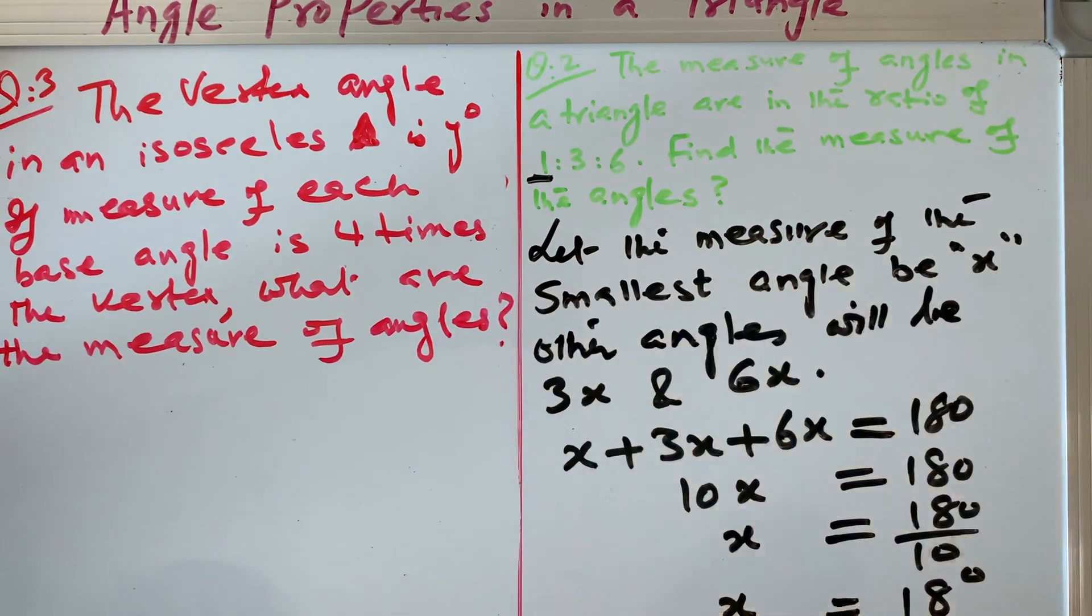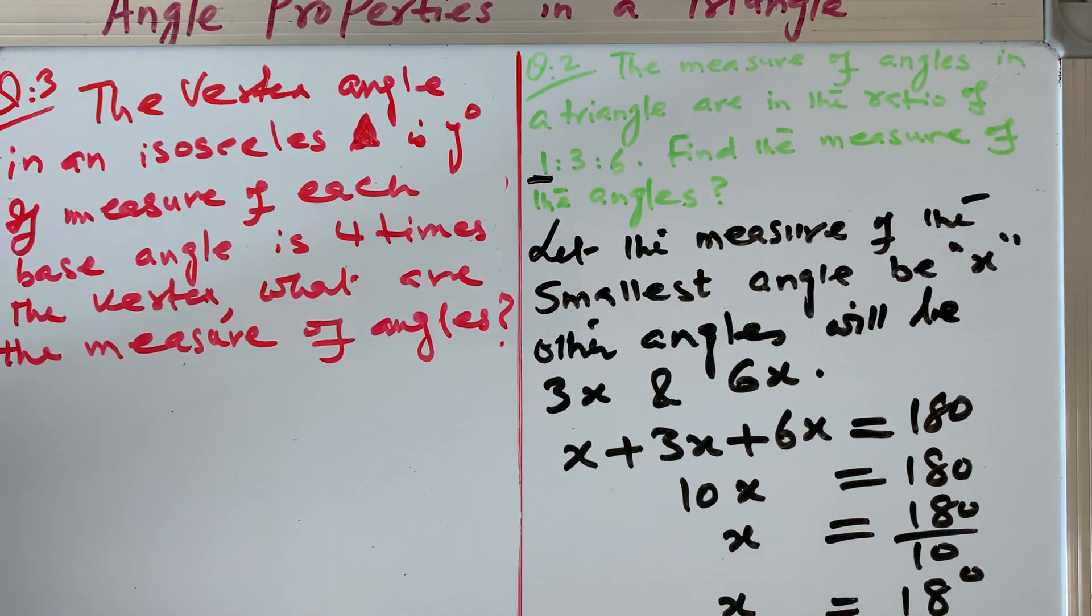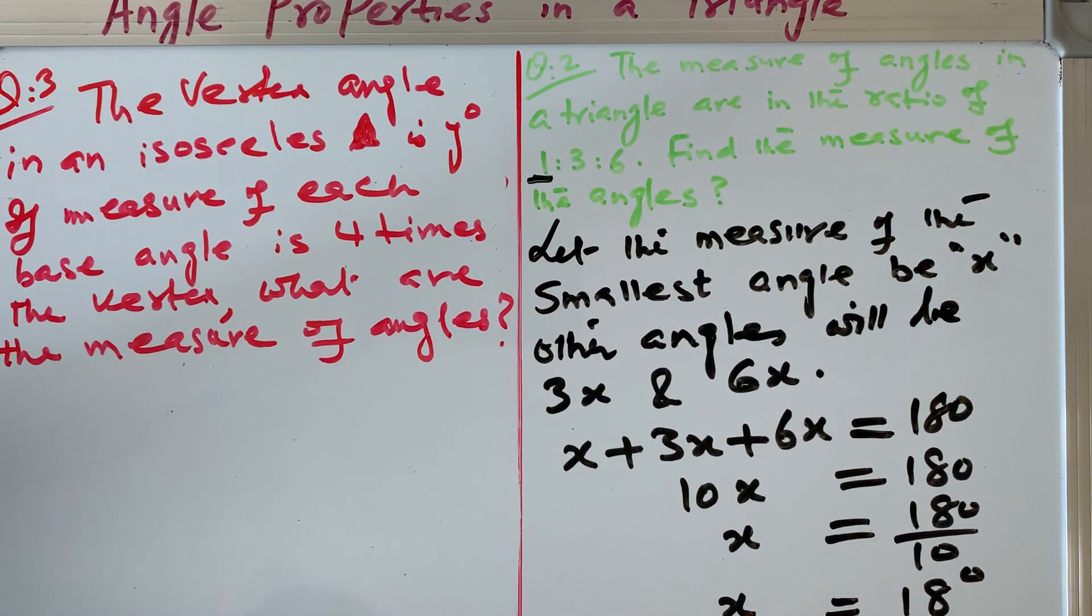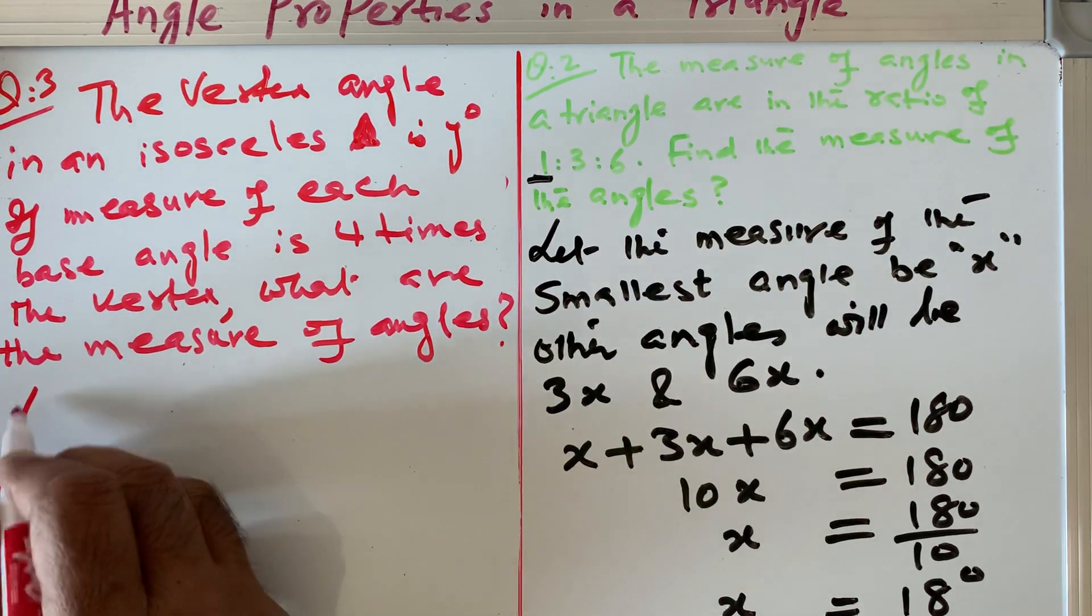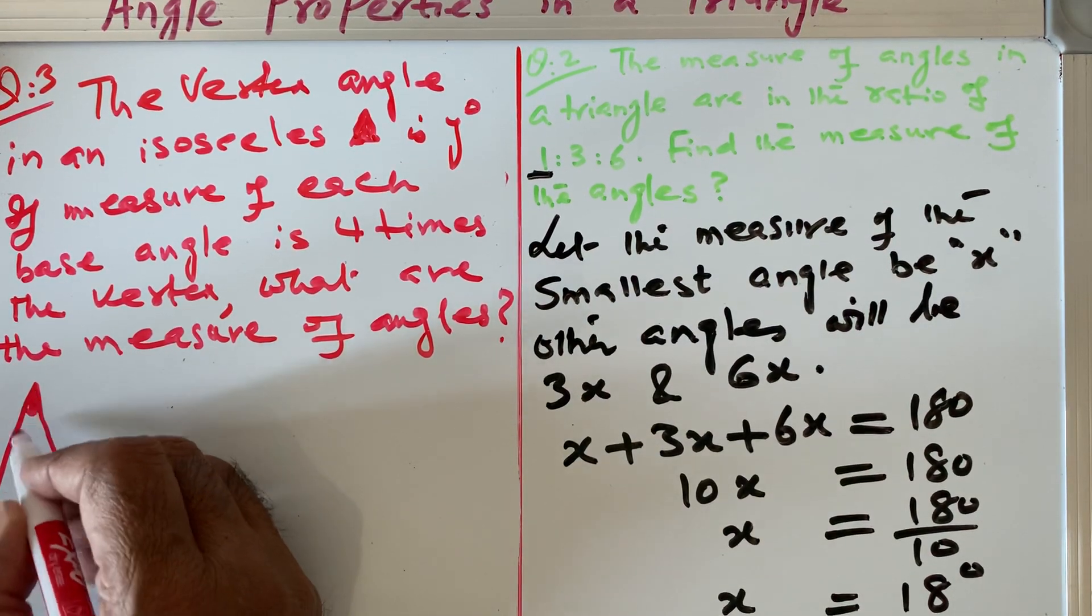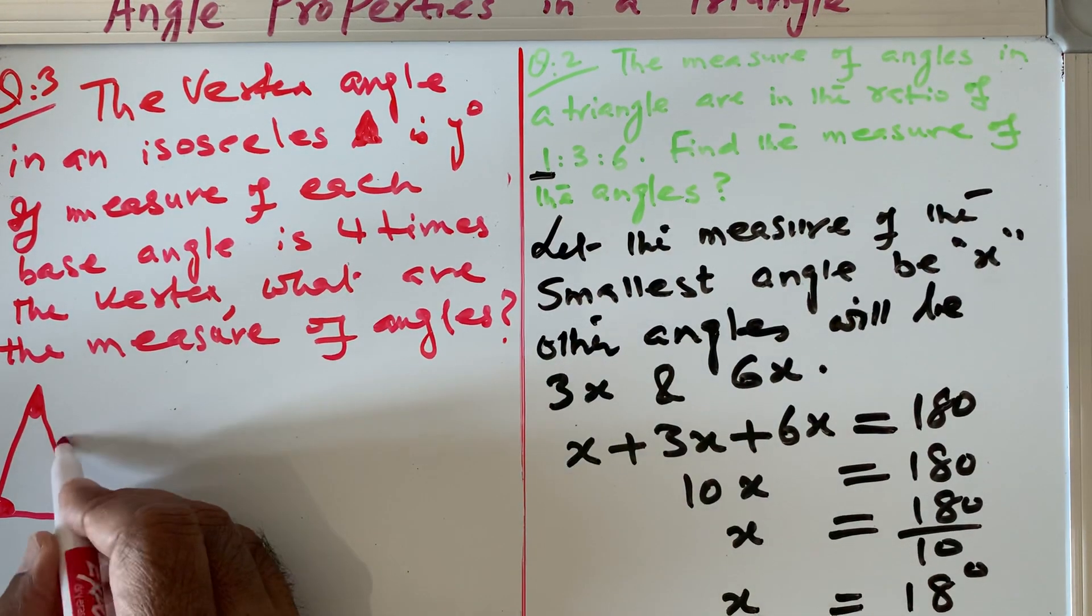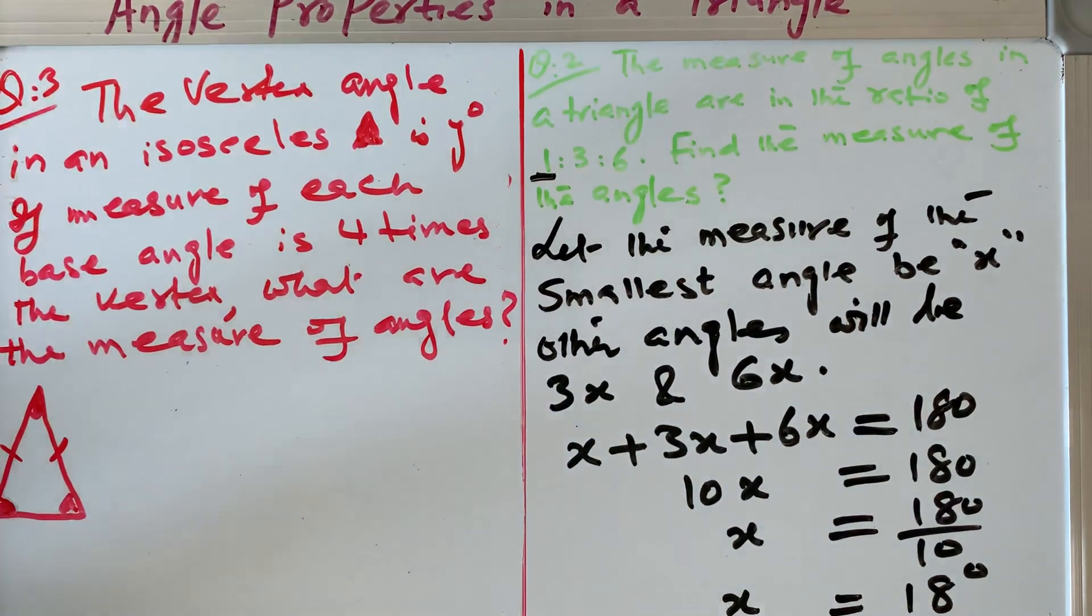If you read the question, it is easy, but you have to think that this is an isosceles triangle where y is the vertex angle. We defined it in the first question. This is my vertex angle, this is my y, and these are my base angles. This is an isosceles triangle.